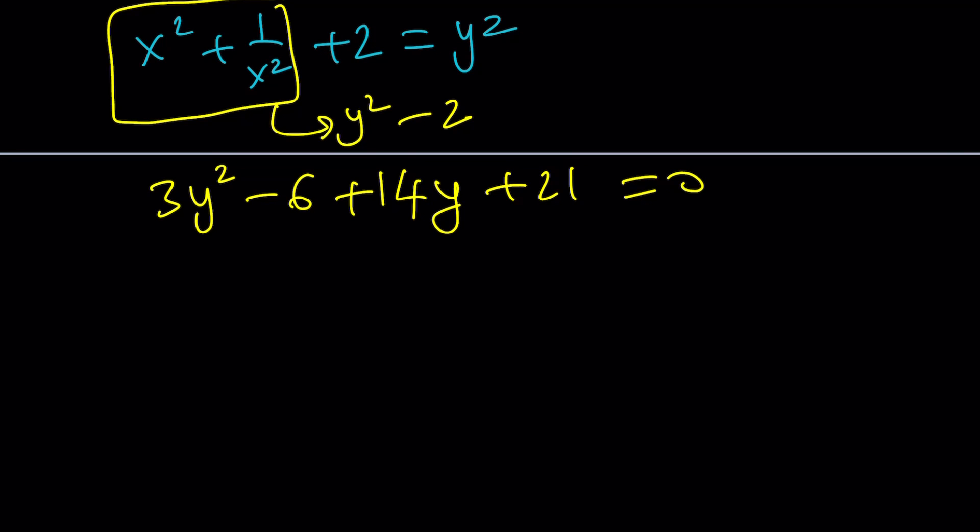By using this special type of substitution. By the way, the substitution is available because we had a polynomial with symmetric coefficients. When we do the second method, you'll see how that plays out. Okay? Now, let's go ahead and combine like terms here and solve this quadratic equation.